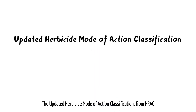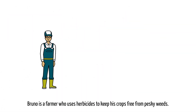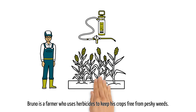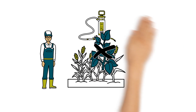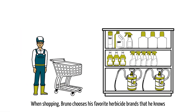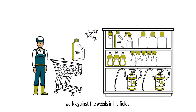The updated herbicide mode of action classification from HRAG. Bruno is a farmer who uses herbicides to keep his crops free from pesky weeds. When shopping, Bruno chooses his favourite herbicide brands that he knows work against the weeds in his fields.